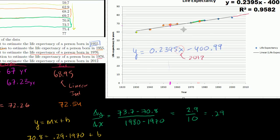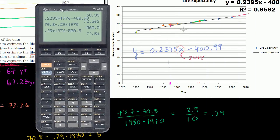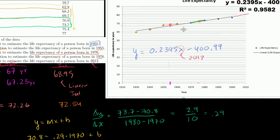So all we have to do is put 2012 in for x, and we'll get what the line of best fit tells us. So we have 0.2395 times 2012 minus 400.99 is equal to 80.88. So this last part, in 2012, if you were to use the line of best fit, the average life expectancy in the US will be 80.88 years.